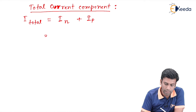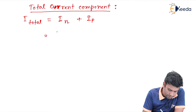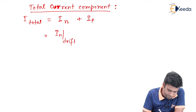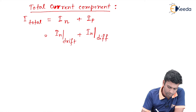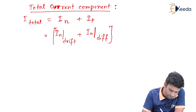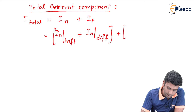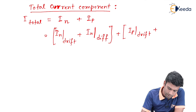This I_n will have two parts, that is I_n due to drift plus I_n due to diffusion. Similarly, I_p will have two parts, that is I_p due to drift plus I_p due to diffusion.